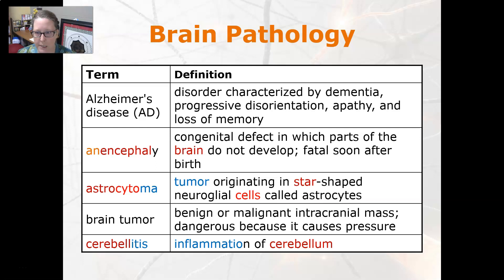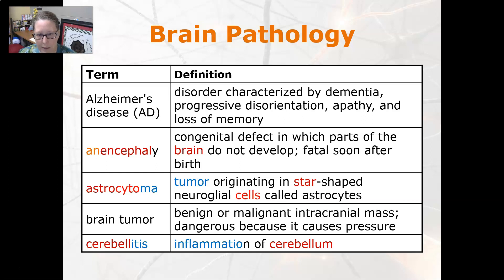Alzheimer's disease is a disorder characterized by dementia, progressive disorientation, apathy, and loss of memory. Anencephaly is a congenital defect in which parts of the brain do not develop; it is fatal soon after birth. Astrocytoma is a tumor that originates in the star-shaped neural glial cells called astrocytes.